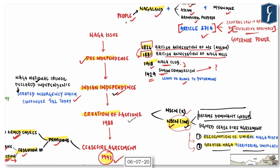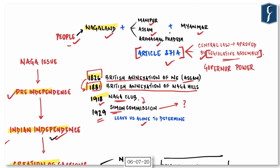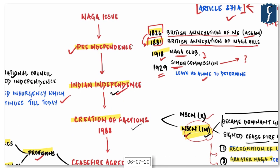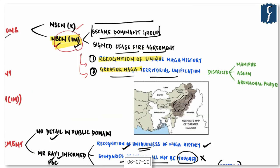The Naga people are scattered across Nagaland, Manipur, Assam, and Arunachal Pradesh, and also across the international border into Myanmar. The Naga issue emerged in both pre-independence and post-independence India. The National Socialist Council of Nagaland Khaplang and Isak Muivah has two main demands: recognition of unique Naga history and identity, and creation of Greater Nagaland encompassing all areas inhabited by Nagas — including districts of Manipur, Assam, and Arunachal Pradesh. This demand is very challenging for India, as it would be resisted by these states.